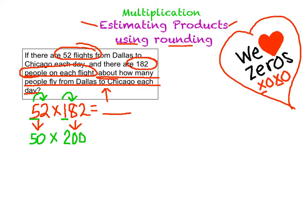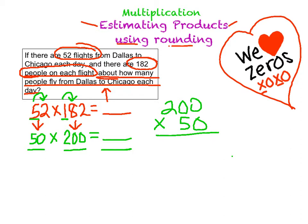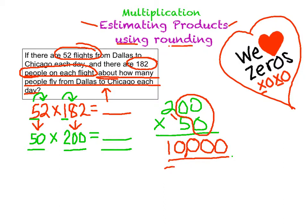So my new problem is 50 times 200. This is about 50 flights times about 200 people, which gives me the total number of people that end up in Chicago. You can write this problem two different ways. Most of you are used to writing it vertically — 200 times 50 so that the big number is on top. What you want to remember is that zeros are super important: we count how many zeros we have. We have a total of three zeros, so my answer is for sure going to have three zeros at the end — in the hundreds, tens, and ones place. Then I multiply 2 times 5, which is 10, so there's another zero. I put in my comma to separate the place value, and I get the answer 10,000.